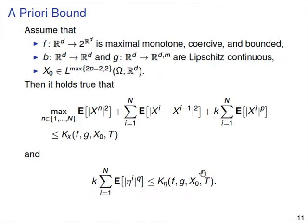For the analysis we also need some a priori bounds. Assuming coercivity and boundedness, we get a discrete L-infinity in time L2 in omega bound for x, a discrete Lp in time Lp in omega bound for x, and for η a discrete Lq in time Lq in omega bound. These exactly correspond to what we have for the exact solution, but now in the discrete setting with the additional coercivity and boundedness conditions.